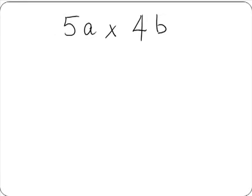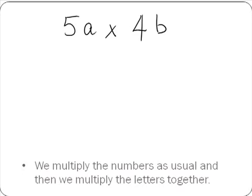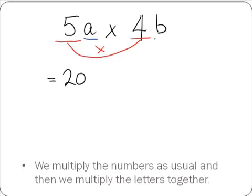Our second example is 5a multiplied by 4b. In this case we have two numbers and two letters. What we do is multiply the numbers as usual and then multiply the letters together. Our numbers are 5 and 4, so 5 by 4 gives us 20. Then we multiply our letters: a by b gives us ab. So our answer is 20ab.